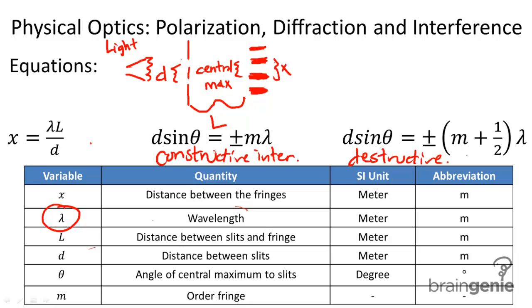D sine theta equals M times lambda, which is the wavelength. Theta in this example, theta is the angle between the central maximum and the slit. The central maximum, again, is that light band here. The bright band right in the center. Theta is literally the angle that forms between the slits. That would be theta.